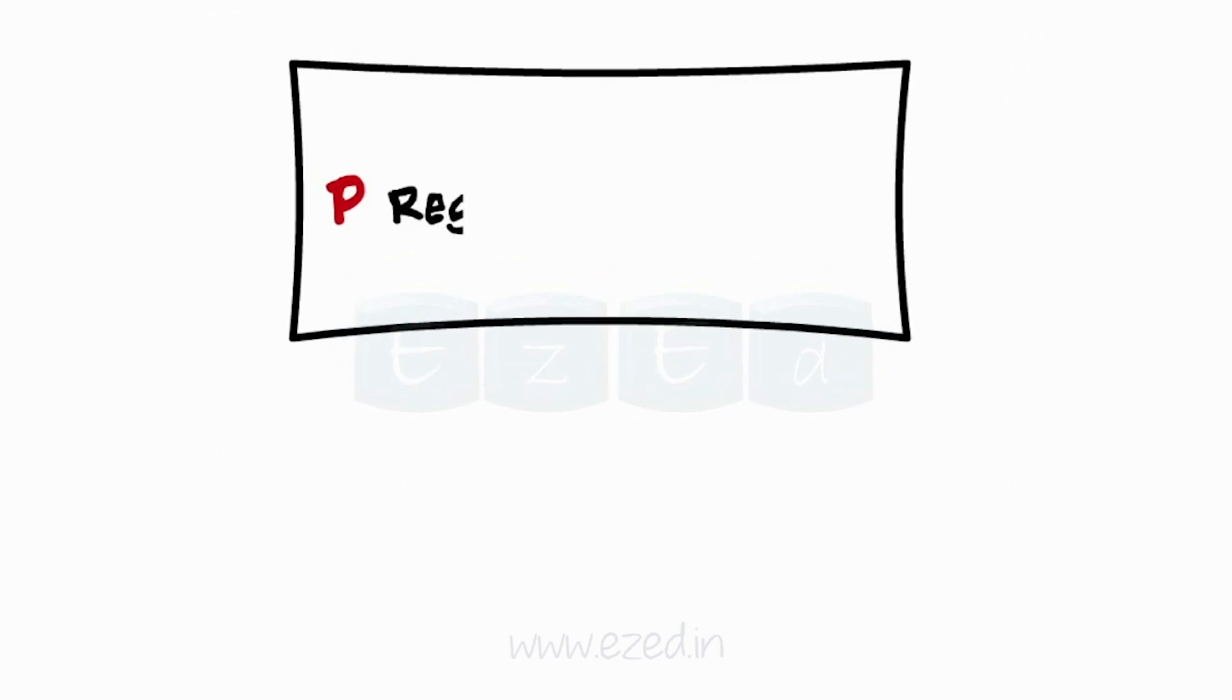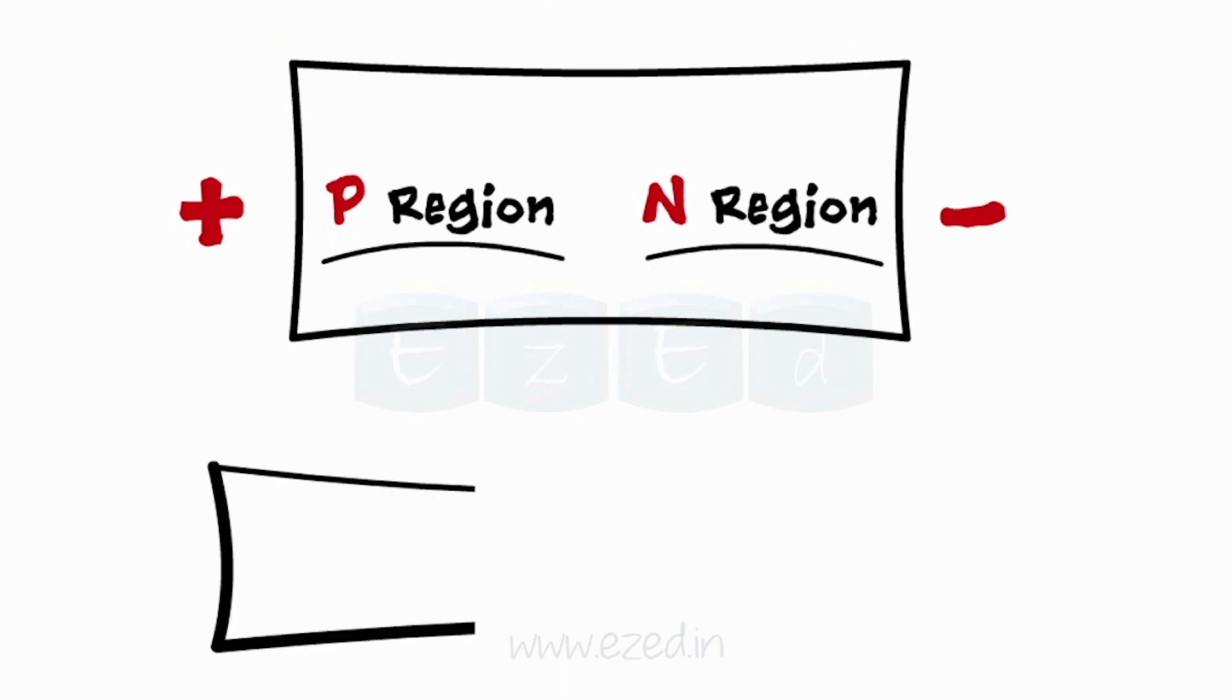As the name PN junction diode itself suggests, we form P and N junctions on the pure semiconductor material.